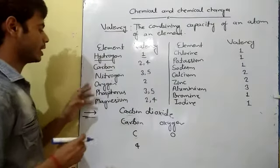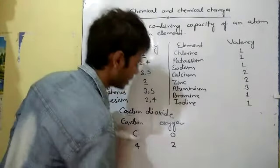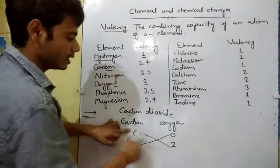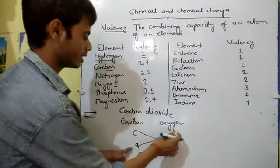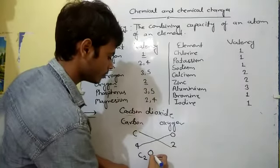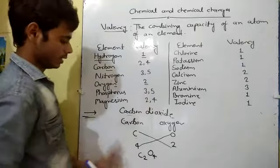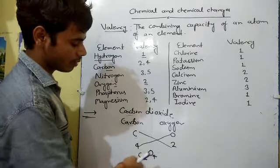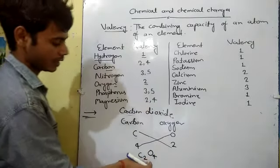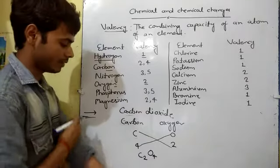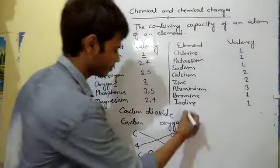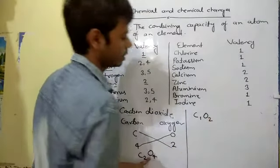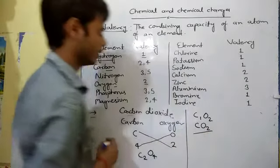After that, we crisscross the valencies and write the valency in the subscript. So we get C2 and O4. We can simplify this — dividing both by two gives us CO2. So CO2 is the chemical formula of carbon dioxide.